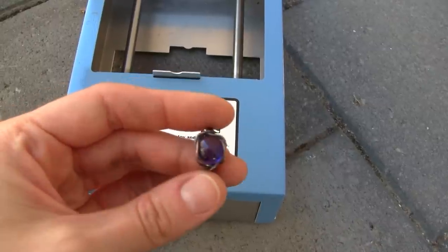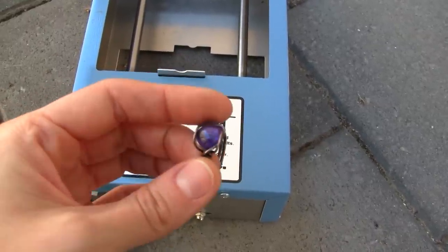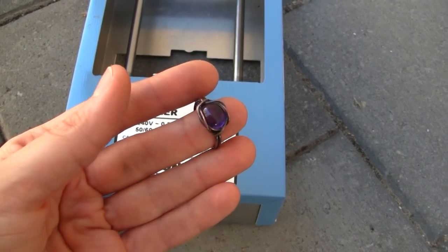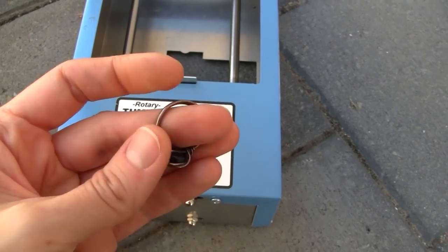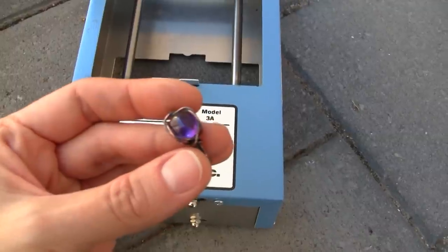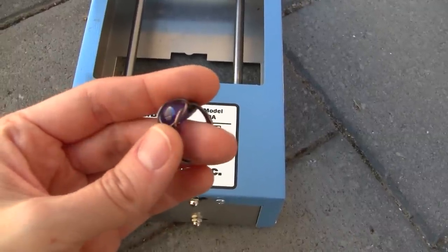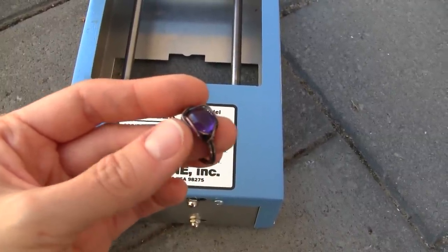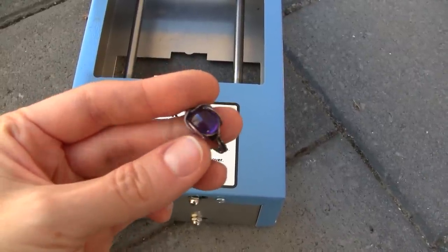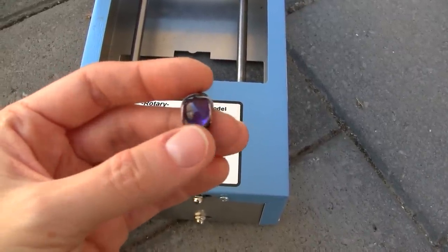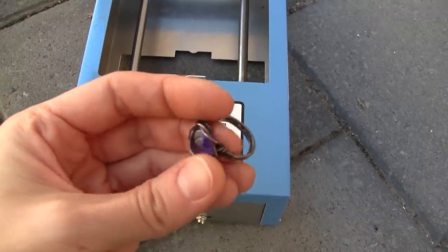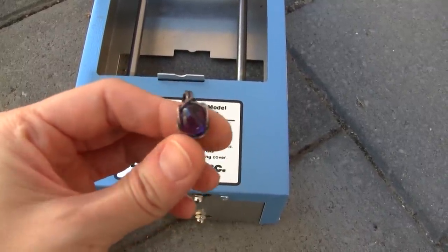So basically for me, the tumbler replaces the steel wool. It kind of saves me a little bit of time doing that initial polish with the steel wool but I still have to do the final polish. So it's up to you whether you think a tumbler is worth it or not for you because it is an expensive thing but I guess it depends on your current process and how you clean and polish your oxidized jewelry. But for me, it has been worth it.